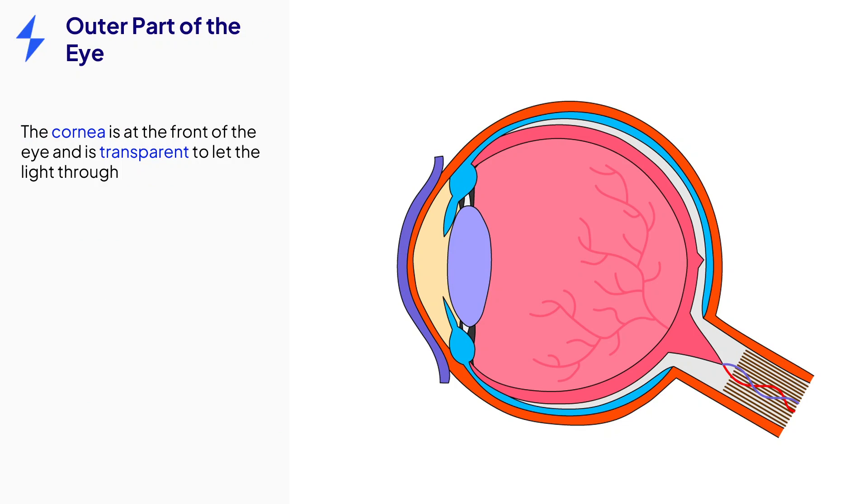Let's start with the outer part of the eye. The outer layer of the eye is very tough in order to be protective. The front section is called the cornea. This part is transparent to let the light through, and it also helps to reflect the light to direct it to focus on the back of the eye.